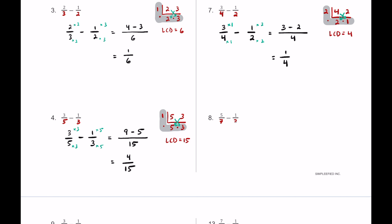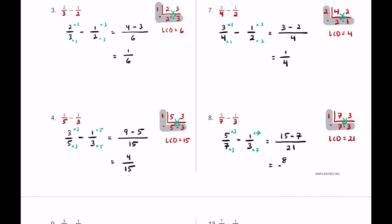For number eight we have five-sevenths and one-third. Seven and three are both prime numbers so their GCF is one, meaning they must meet when multiplied: one times seven is seven, seven times three is twenty-one — so the LCD is twenty-one. Five-sevenths times three over three, one-third times seven over seven: five times three is fifteen, one times seven is seven, so fifteen minus seven equals eight — giving eight over twenty-one.